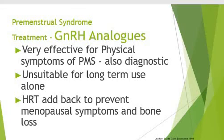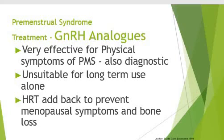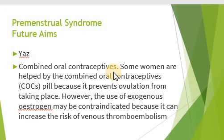GnRH analogues are also effective in management of PMS but are reserved only for physical symptoms — they are less effective for emotional symptoms. These agents inhibit the hypothalamic-pituitary-gonadal axis and are unsuitable for long-term use alone. Hormone replacement therapy is added back to prevent menopausal symptoms and bone loss; their use is not recommended for more than six months because they induce hypoestrogenic activity causing significant bone loss.